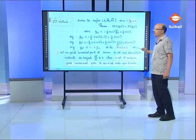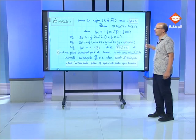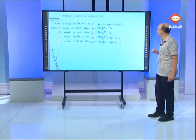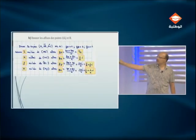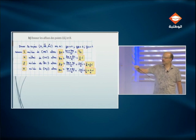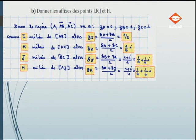Question B : donner les affixes des points I, K, J et H. ZI = (ZA + ZB)/2 = 1/2. ZK = (ZA + ZC)/2 = i/2. ZJ = (ZB + ZC)/2 = 1/2 + i/2 (J milieu de BC). ZH = (ZA + ZJ)/2 = (1 + i)/4, c'est-à-dire partie réelle 1/4 et partie imaginaire 1/4.